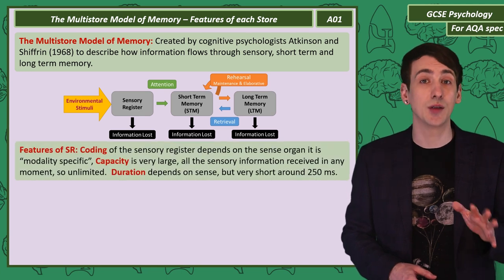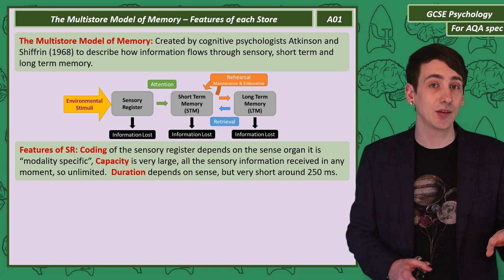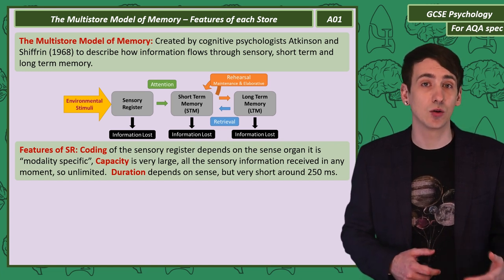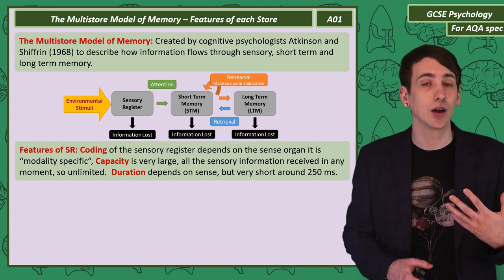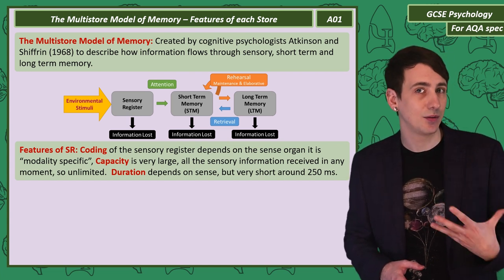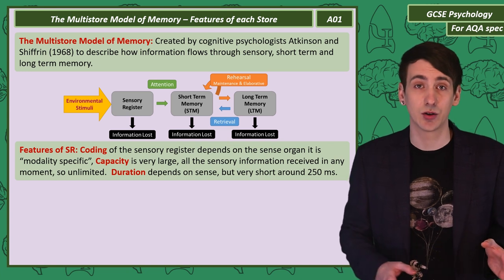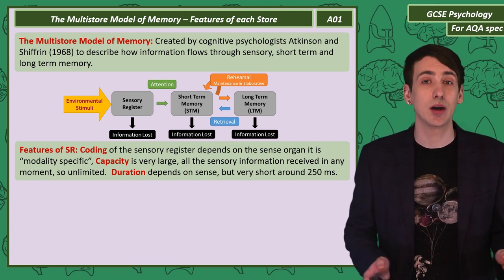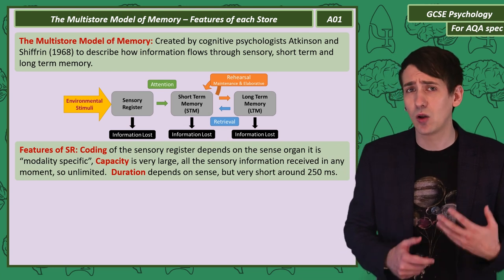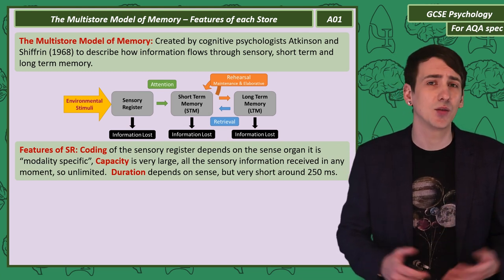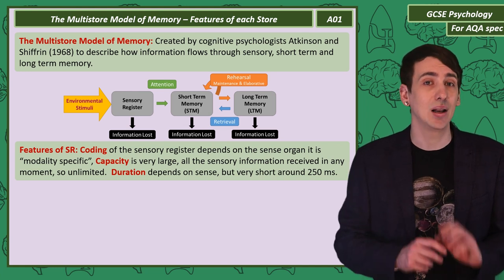Starting with the sensory register. The information comes directly from the sensors, and the way that information is stored depends on the sense — we would call that kind of coding modality specific. The capacity is very large, as it has to take in all the information from all the sensors. But the duration — how long that information is held — is very short. It can be around 250 milliseconds.